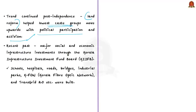In the recent past, Kerala has seen major investments to build social and economic infrastructure through the Kerala Infrastructure Investment Fund Board, or KIIFB. KIIFB funding is being used to build schools, hospitals, roads, bridges, industrial parks, and massive public sector internet projects like KFON — the Kerala Fiber Optic Network — and also TransGrid 2.0, a project to improve the power transmission network in Kerala.